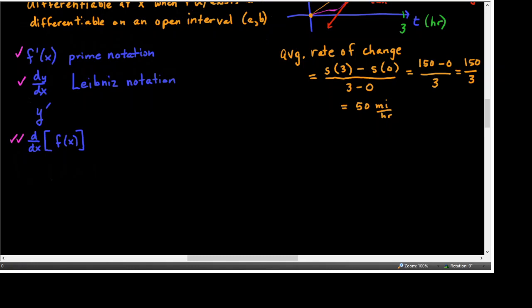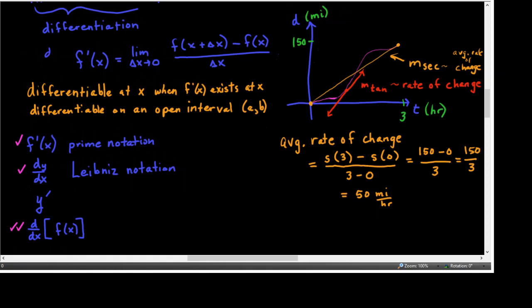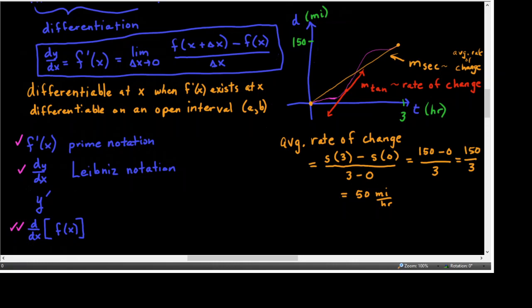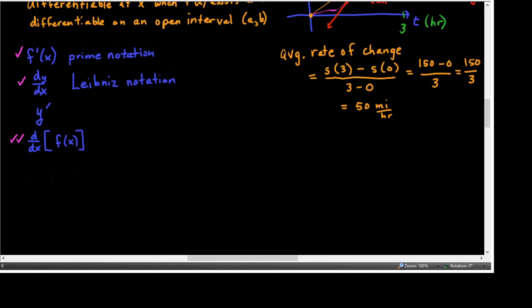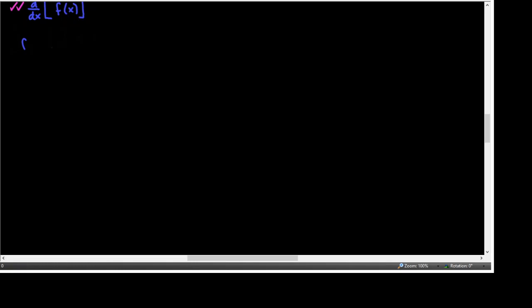All of those notations are found using the definition of the derivative written above. This is a very important definition — something you are responsible for knowing inside and out. So let's use that definition of the derivative to find the derivative of f(x) = x³ + 2x.